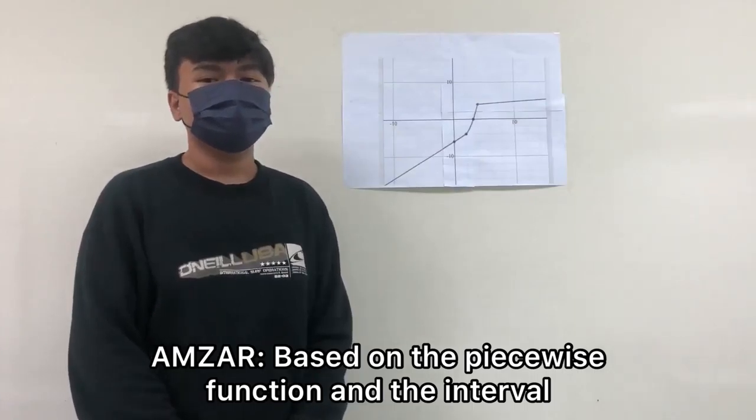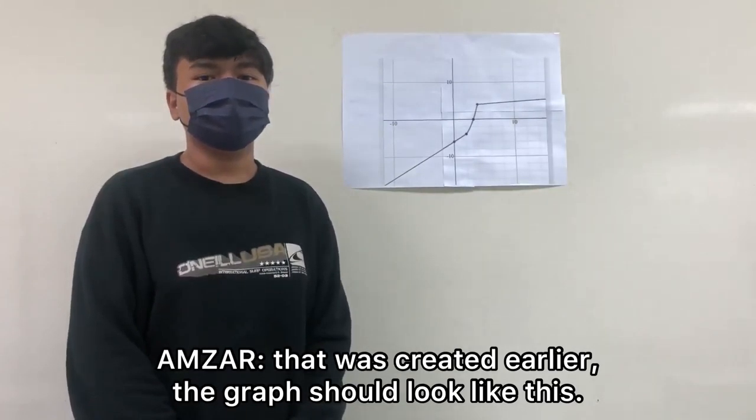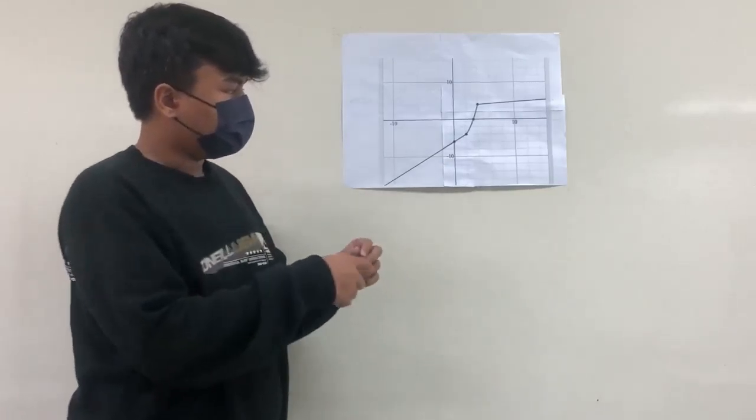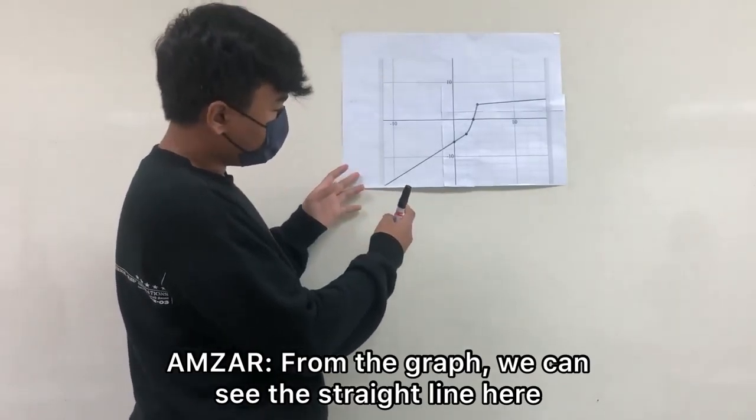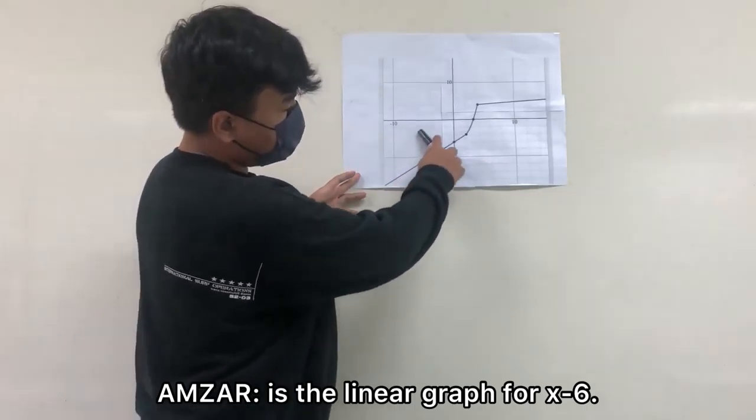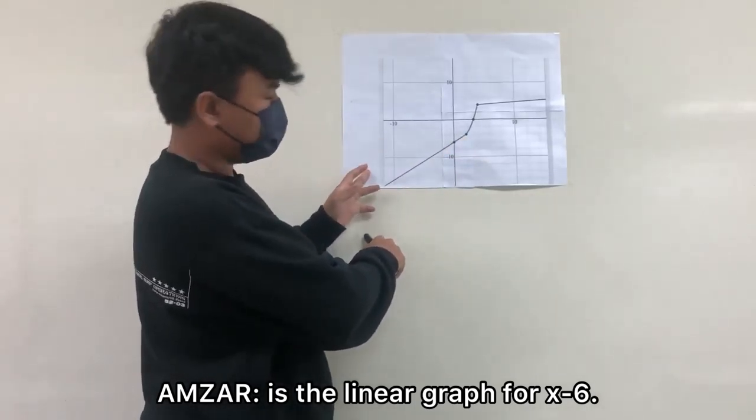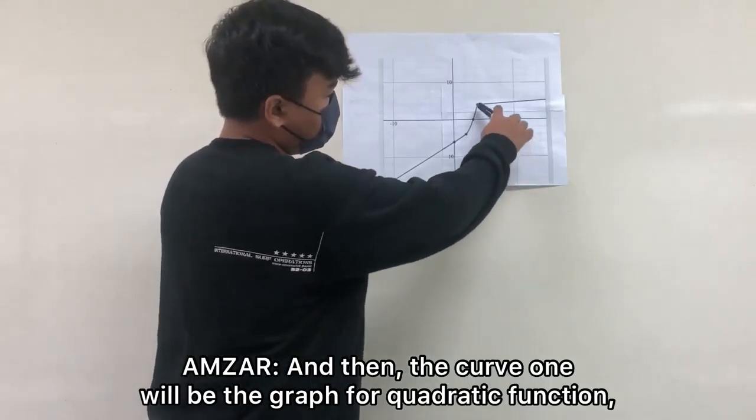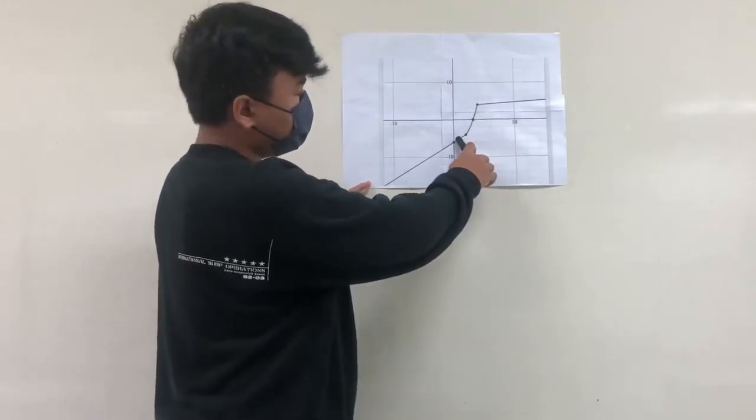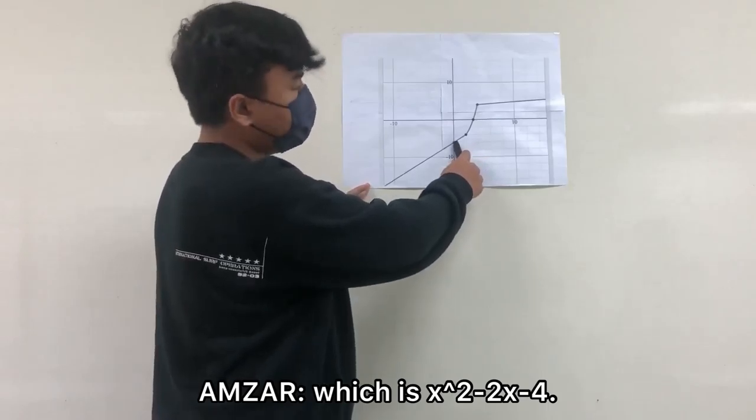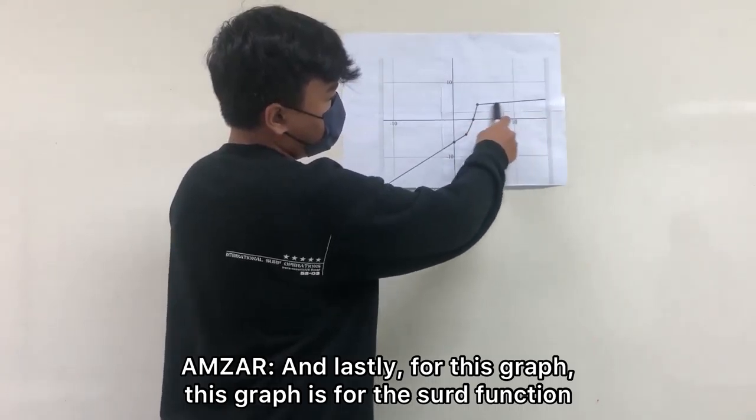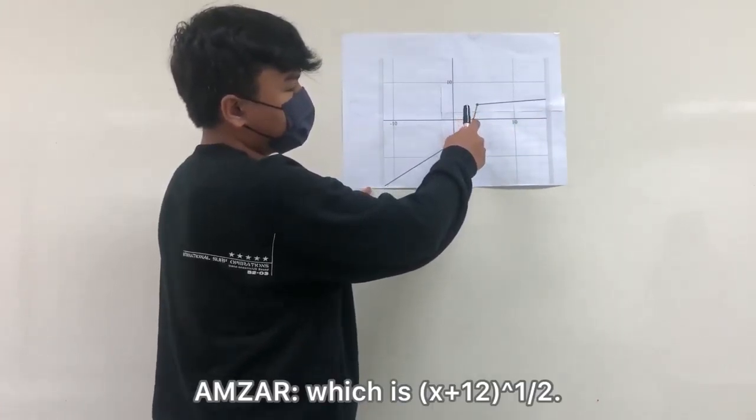Based on the piecewise function and the interval that was created earlier, the graph should look like this. From the graph, we can see the straight line here is the linear graph for x minus 6. And then, the curve will be the graph for the quadratic function, which is x squared minus 2x minus 4. And lastly, this graph is for the root function, which is root of x plus 2.